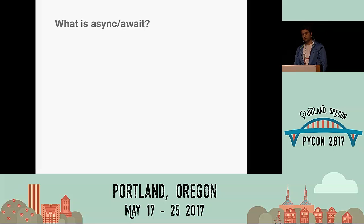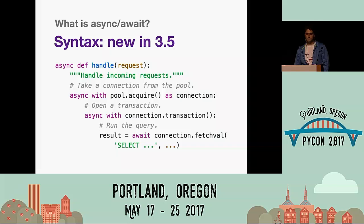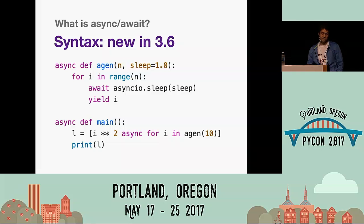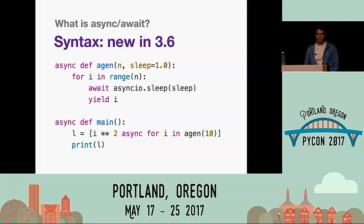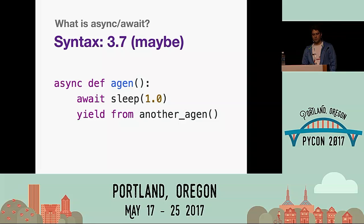What is async/await? Obviously it's a syntax. We first added it in Python 3.5 with syntax to define coroutines or async functions, syntax for asynchronous context managers, and the await expression. In 3.6, we took it even further — we now have asynchronous generators, asynchronous list comprehensions, and asynchronous generator expressions. At this point, we have almost complete coverage of whatever you can do in Python synchronous mode, you can do with async/await. Except one thing: yield-from for asynchronous generators. We might add that syntax in 3.7, but it's not a top priority.